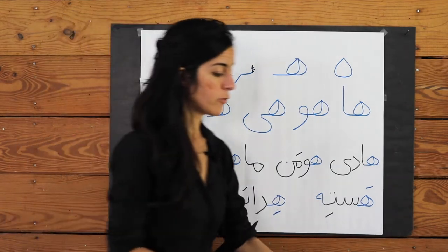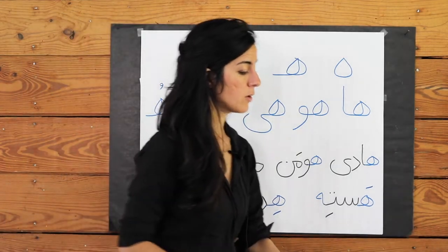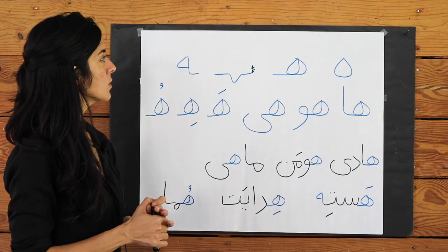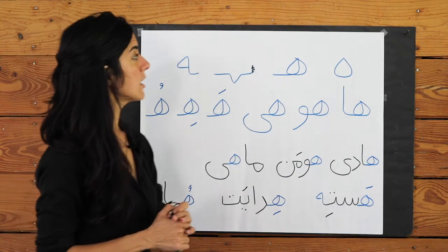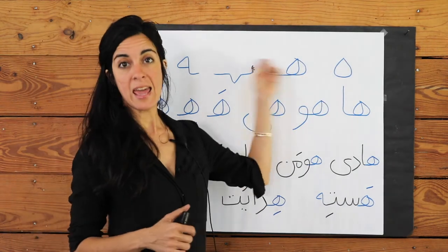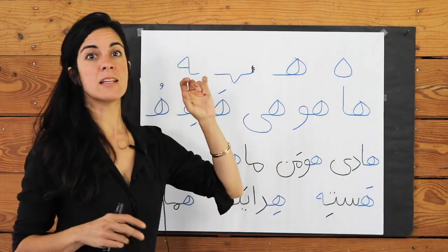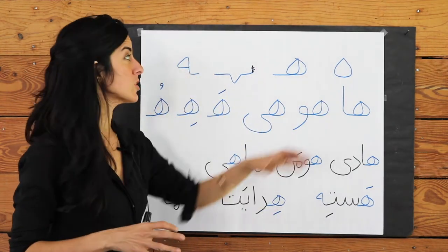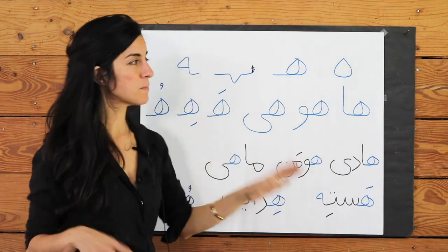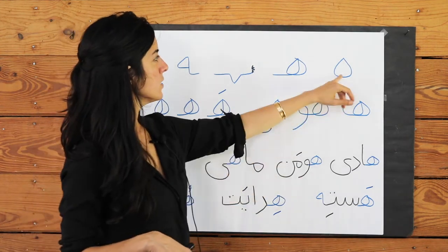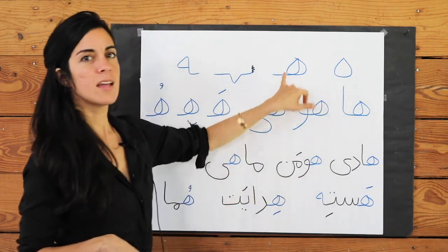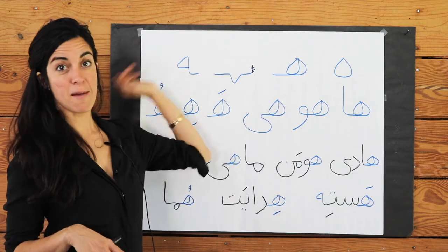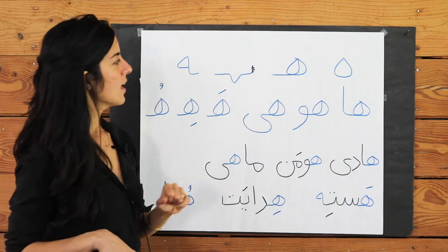Let's go over all of our words again. The letter H doesn't have a bozorg and küçük version — it just has four different versions.